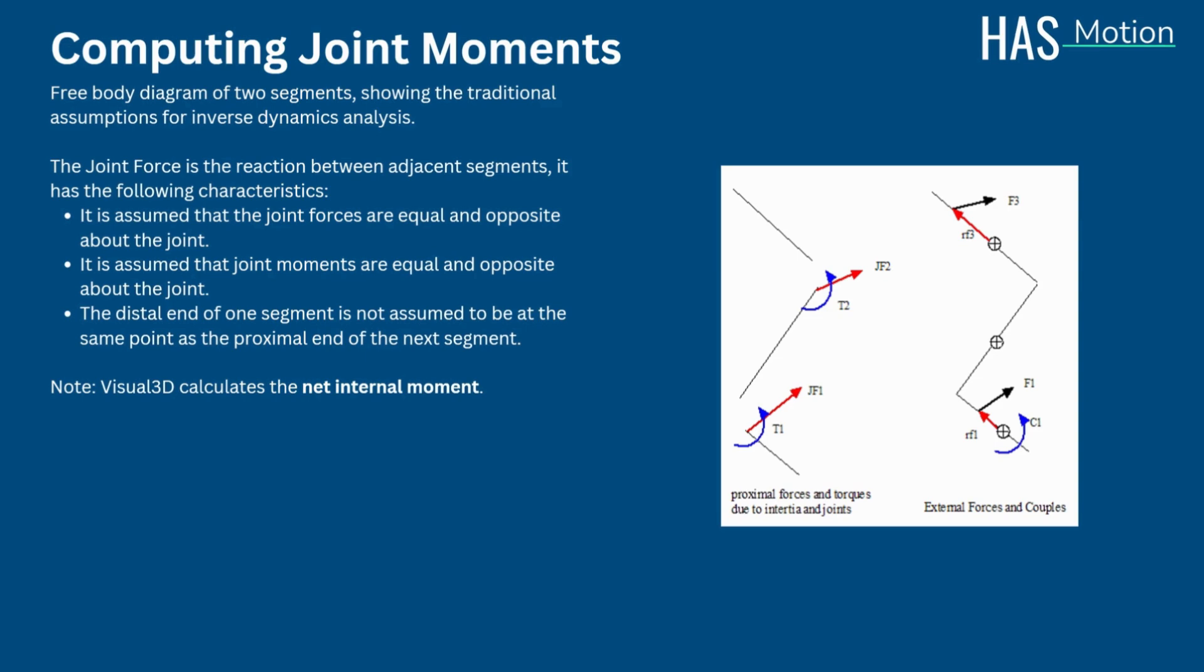The external moment is balanced by the net internal moment produced by muscles and ligaments. For example, a net internal moment dominated by the quadriceps muscles would be needed to balance a net external moment created by the ground reaction force. Mathematically, the external moment is equal and opposite to the internal moment, but the user is cautioned to reference the term if it is used in an article.